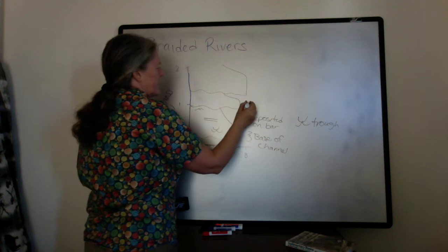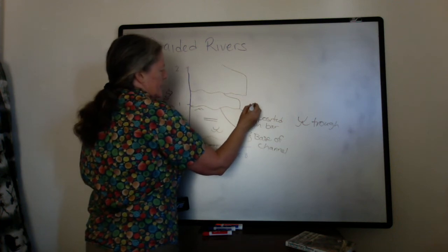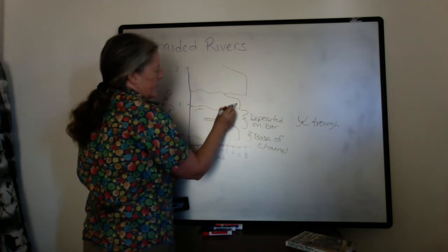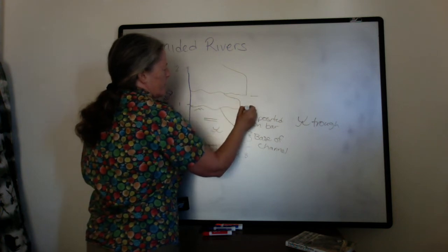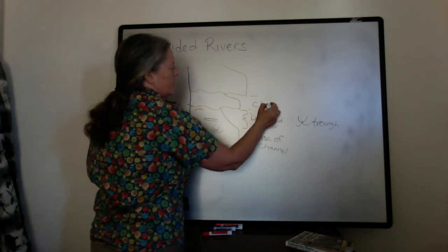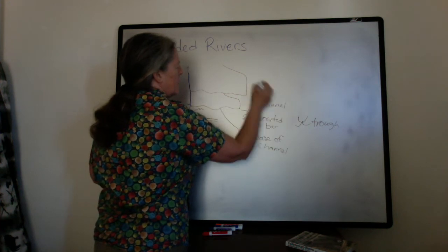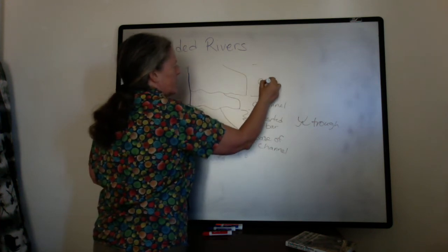And the thicknesses vary. So this would be, again, the base of a channel, the main part of a channel fining upward onto the bar. So this would be another channel deposit. And then this would be a channel deposit as well.